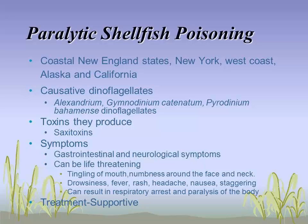A single butter clam can have the equivalent of half a dozen lethal doses in it — you don't have to eat a whole one. Key symptoms are tingling of the mouth and numbness in the fingers, progressing to the face and neck, with muscle stiffness, drowsiness, headache, and nausea. Ultimately, a lethal dose causes respiratory arrest or paralysis. If the person can be put on a respirator, usually within 24 hours they walk away. There is no antidote for any of these toxins, including cyanobacteria toxins, but there are supportive treatments.